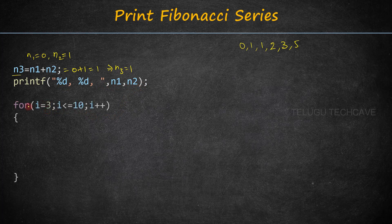Next, we set up a for loop. The loop starts with i equal to 3, the condition is i less than or equal to 10, and we increment with i++.